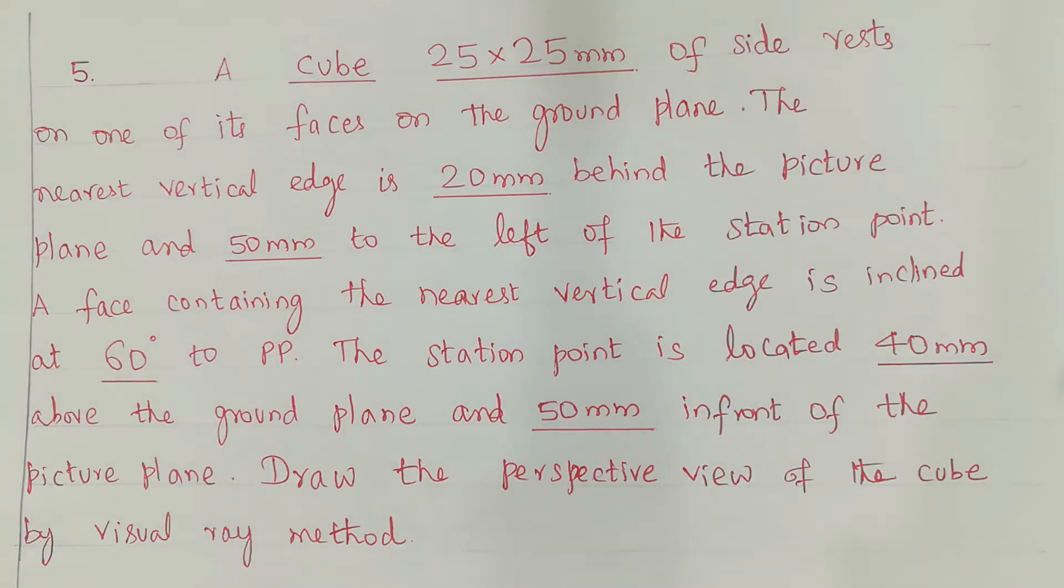Please read the question. A cube 25 mm x 25 mm of side rests on one of its faces on the ground plane. The nearest vertical edge is 20 mm behind the picture plane and 50 mm to the left of the station point.